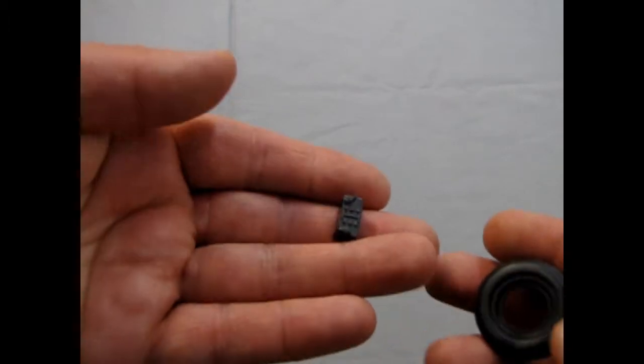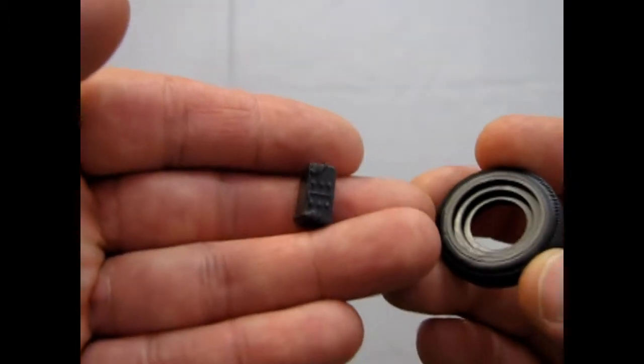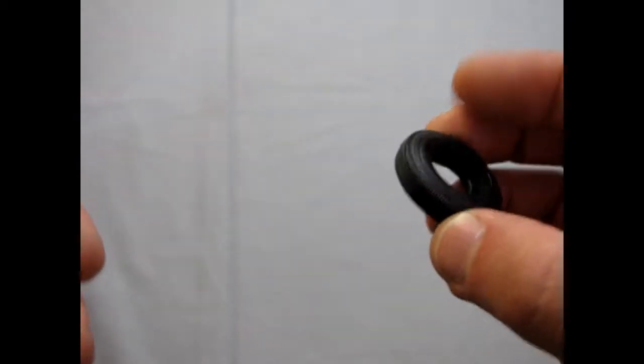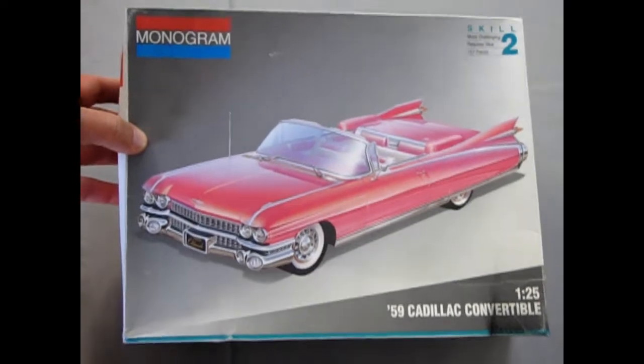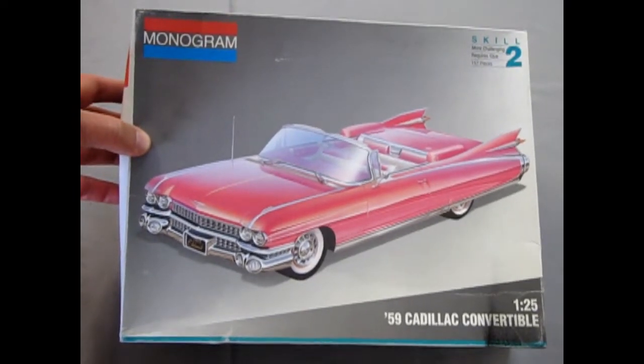And finally, we have our tires. And I don't know if I showed it, but oh yeah, the white wall inserts are with the convertible top and there's a battery for you too. So that will conclude our examination of the Monogram 1959 Cadillac convertible.